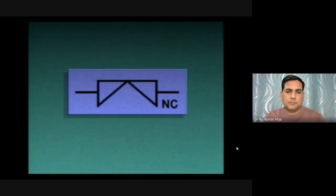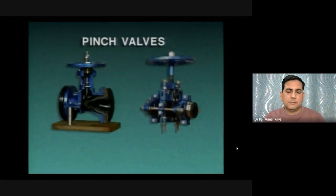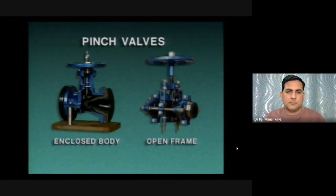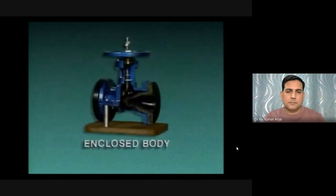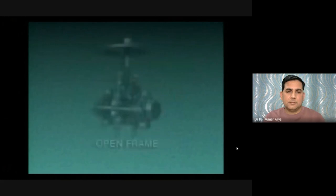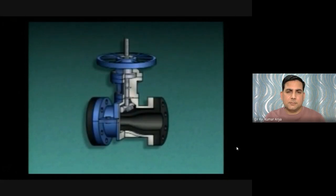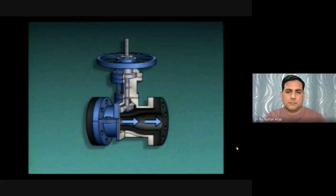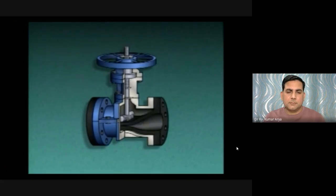Pinch valves are sometimes used to control the flow of heavy sludge and slurries. They come in two basic types: enclosed body pinch valves and open frame pinch valves. An enclosed body pinch valve has a cylindrical body, and consists of a stem, a hand wheel, a bar or clamp, and a flexible tube through which fluid flows. As the hand wheel is turned to close the valve, the stem pushes the bar against the tube, squeezing or pinching it to stop flow.